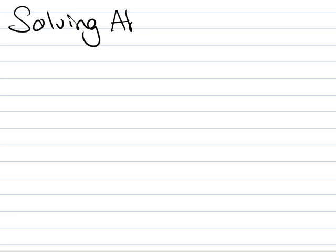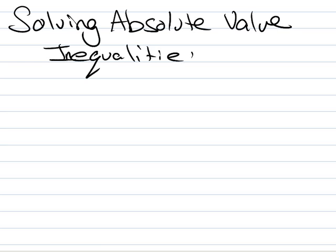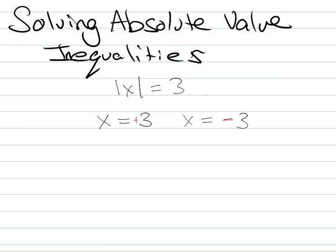The last thing we're going to talk about today is solving absolute value inequalities. So say you've got something like absolute value of x equals 3. Hopefully you'll say that means x equals 3 or x equals negative 3, right? You've got a plus and a minus. You rewrite the whole thing just by itself and then rewrite it again with a minus in front. We're going to do something kind of similar here.